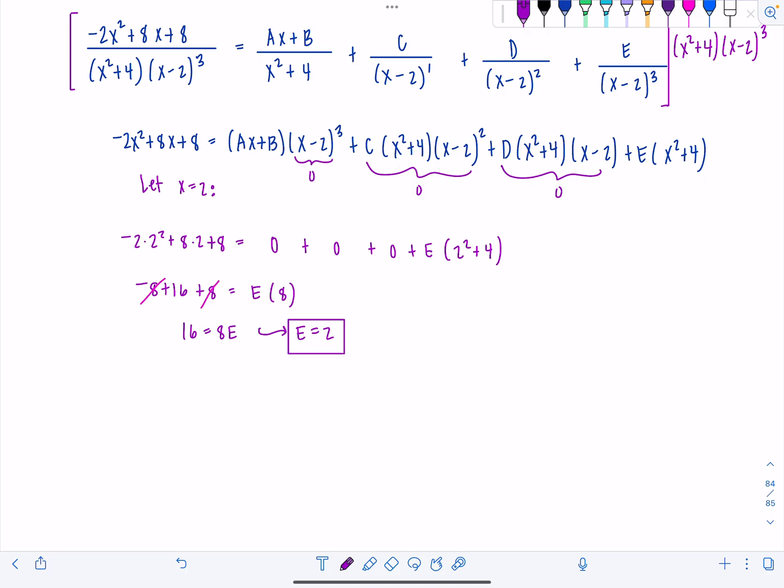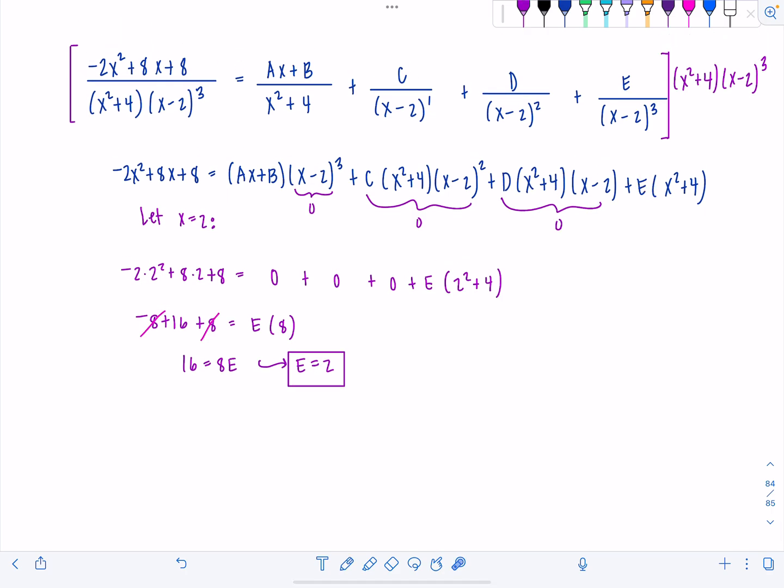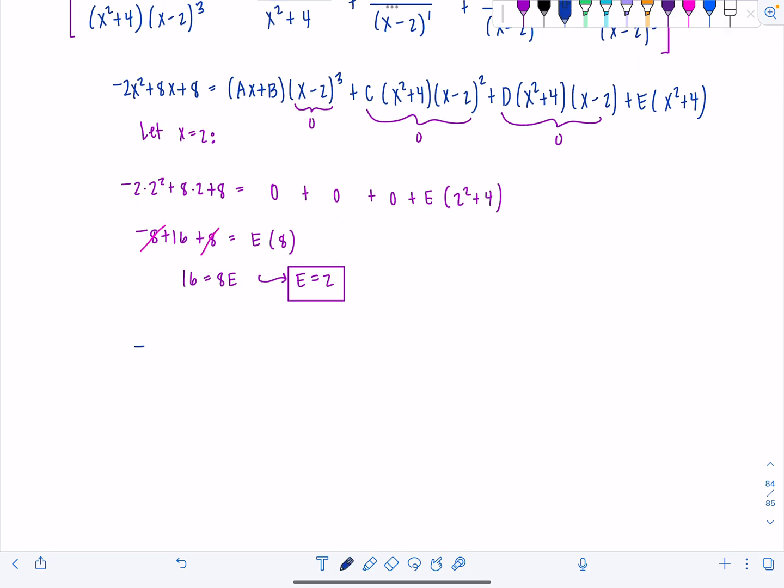All right, here's kind of the funky part. So once you know e is 2, you can't plug in anything else. Any other values of x that are going to 0 out and help you find these constants, and nothing will make x squared plus 4 equal 0 over the real numbers. So we actually go back to this step right here and substitute in 2 for e. I know, it's a little strange. So we have negative 2x squared plus 8x plus 8 equals ax plus b, x minus 2 cubed, c times x squared plus 4, x minus 2 squared, etc. Just keep it going.